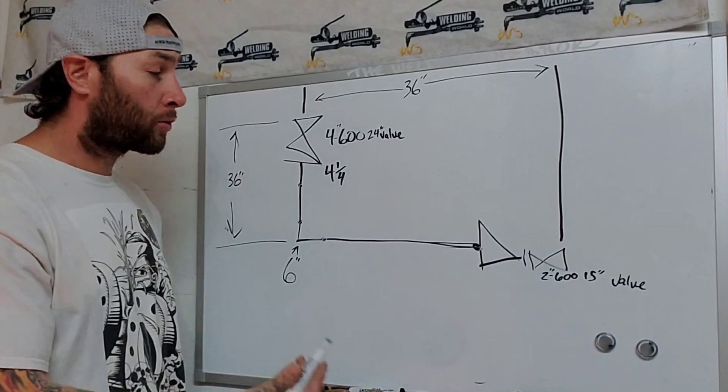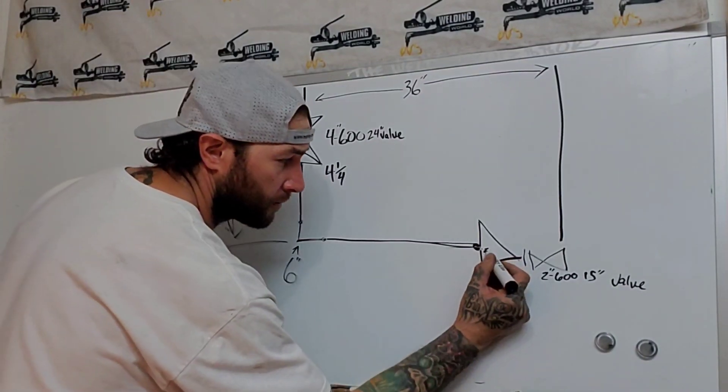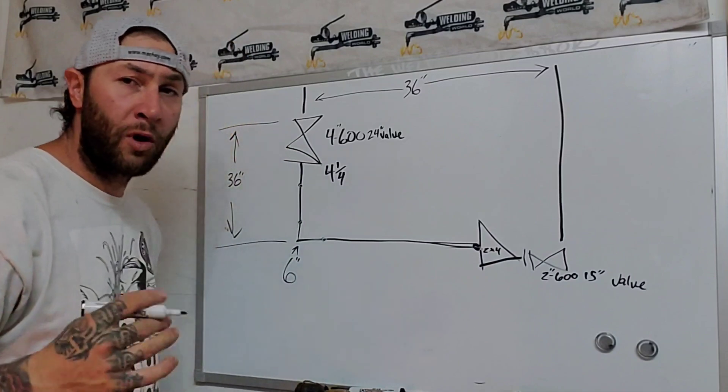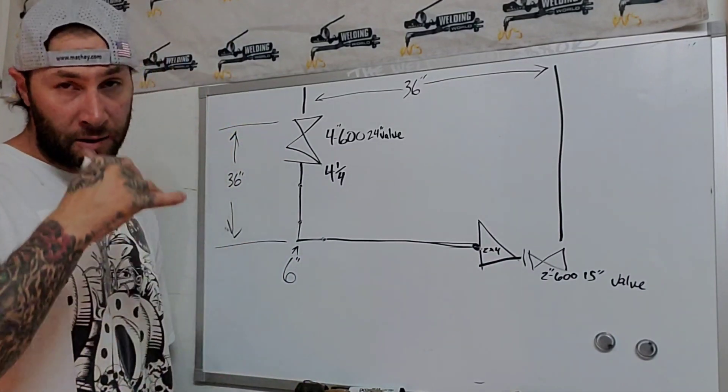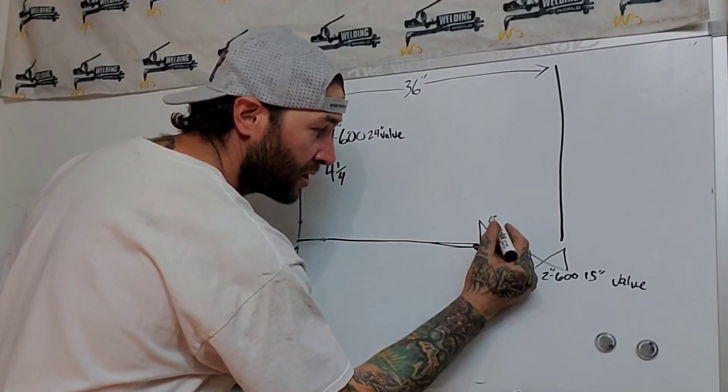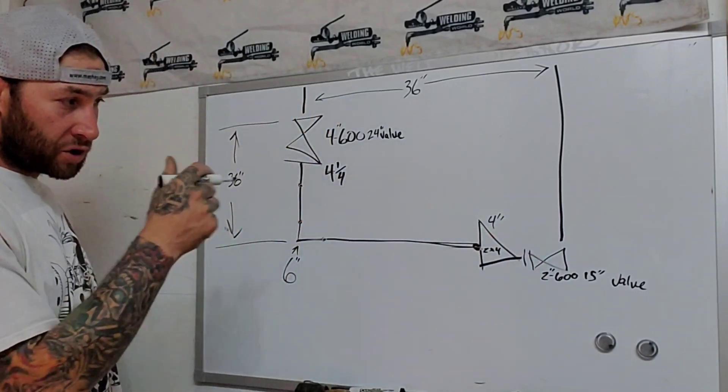We come over here, we know we've got a reducer. It's a 2-by-4 reducer. Most 4-inch reducers that reduce down are about 4 inches. So we know that that's a 4-inch reducer.